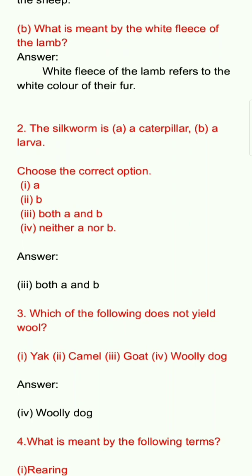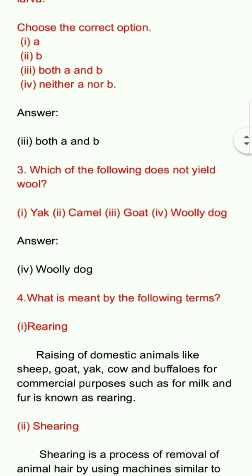Third question: Which of the following does not yield wool? Options: one, yak; two, camel; three, goat; four, woolly dog. Answer: woolly dog.